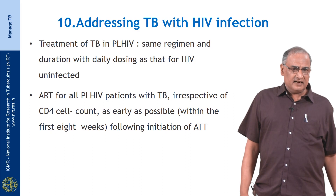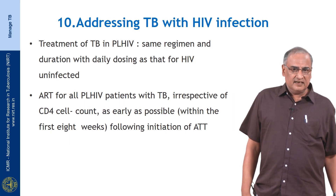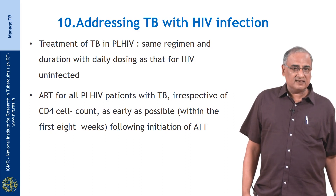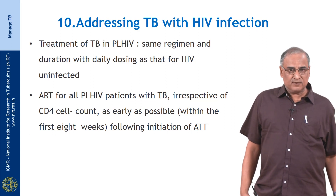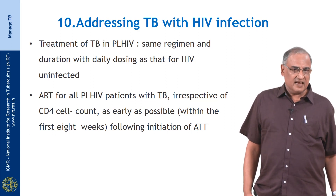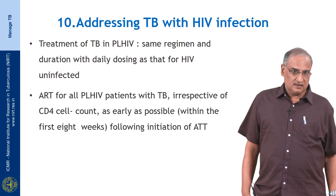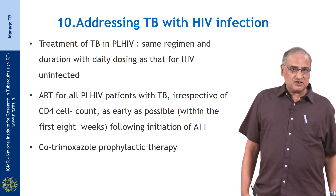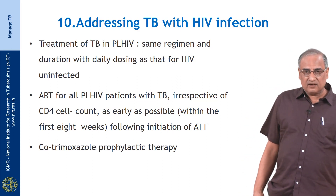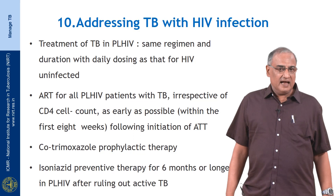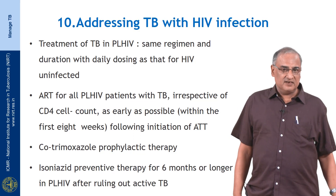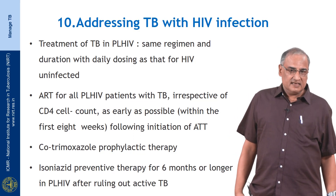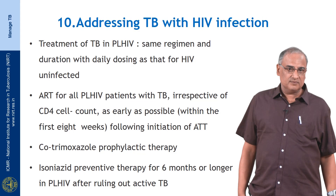Antiretroviral therapy (ART) has to be started irrespective of the CD4 cell count in these patients, and this should be done as early as possible, preferably within the first 8 weeks following initiation of anti-tuberculous treatment. Cotrimoxazole prophylactic therapy is given to prevent other opportunistic infections, and isoniazid preventive therapy for 6 months or longer is given after ruling out active tuberculosis.